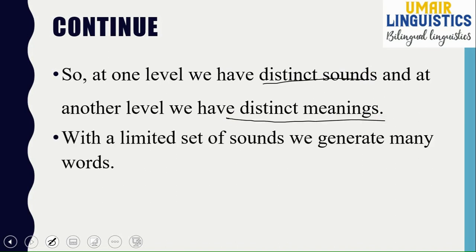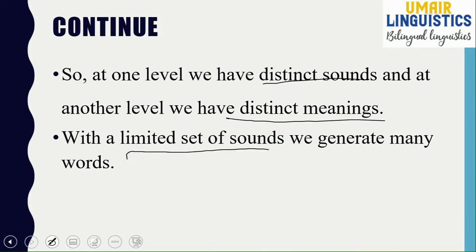Duality is one of the most economical features of human language — with a limited set of sounds, we generate a vast number of words: millions and billions. In English, we have just 44 sounds, and from them we have produced a huge number of words. This is a general phenomenon that is already at work in language, and now you have the linguistic term and definition for it.